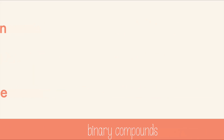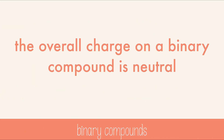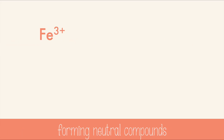The overall charge of a binary compound is neutral. Let's see how cations and anions can fit together to make neutral compounds. Let's say you know you're working with iron three and oxygen. Iron three has a plus three charge, and oxygen has a minus two. If we add these charges up, we get plus one. It's not neutral yet, so we need more negatives.